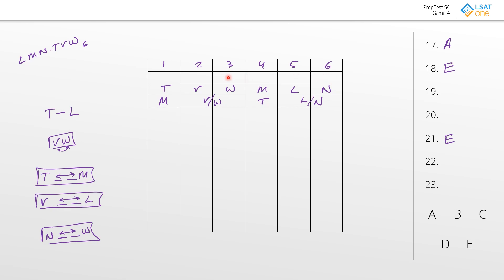Answer C — N in five: using our new deduction, W would have to go into two, but V could still shuffle between one and three, so that's probably not enough. Answer D — V in year one: if V is in one, W must go into two. We also know V and L must be two apart, so L would have to go into four — let's run this scenario.